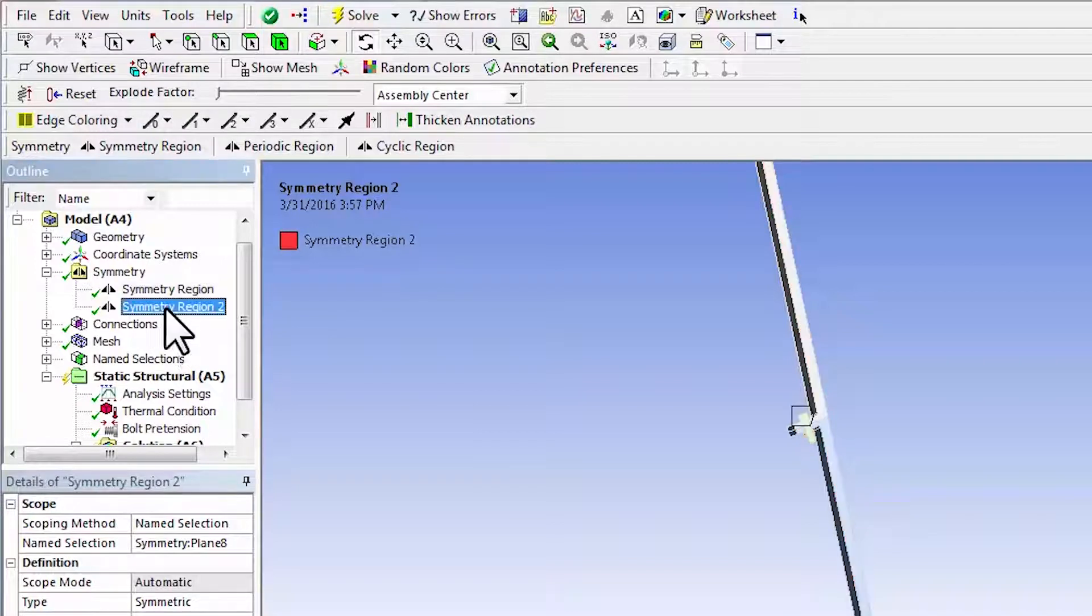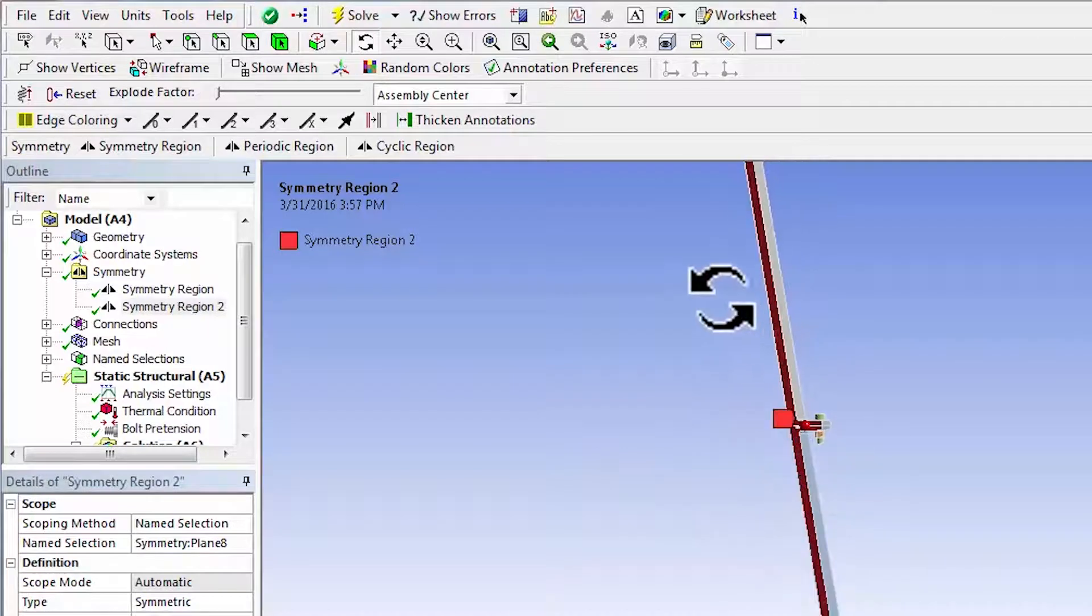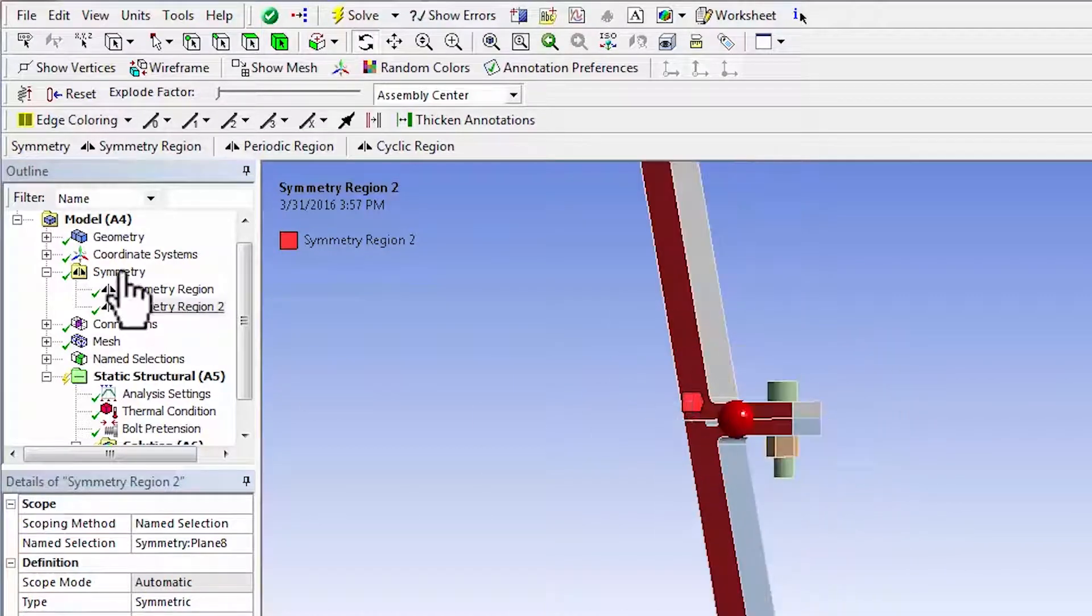And similarly, symmetry region two is the one behind over here that's highlighted. So if I zoom in here, that means that both these surfaces can displace only parallel to itself, and there can be no displacement perpendicular to the surface.